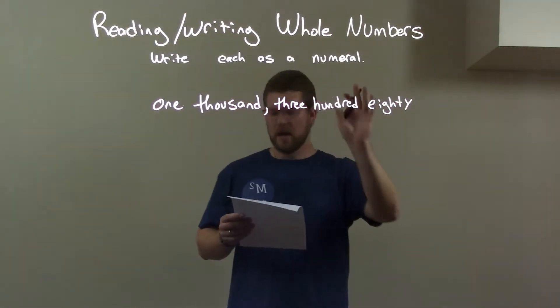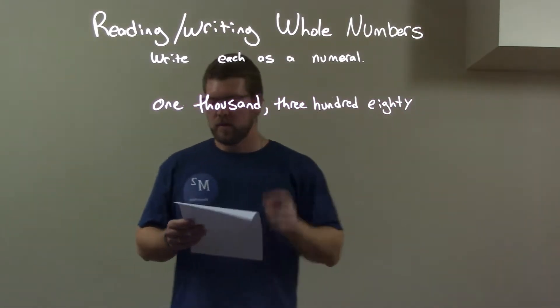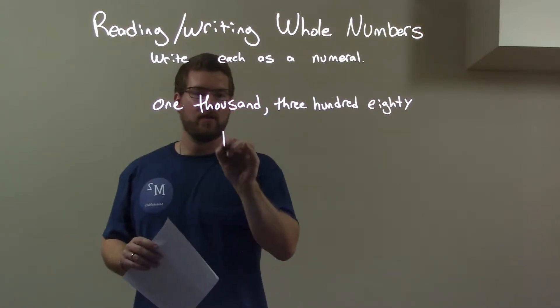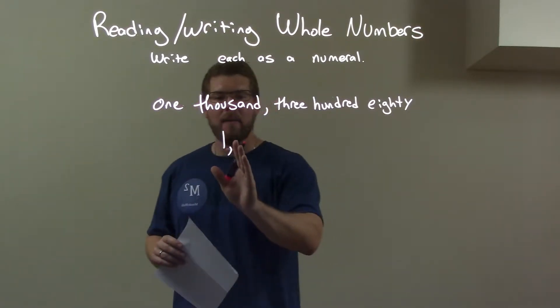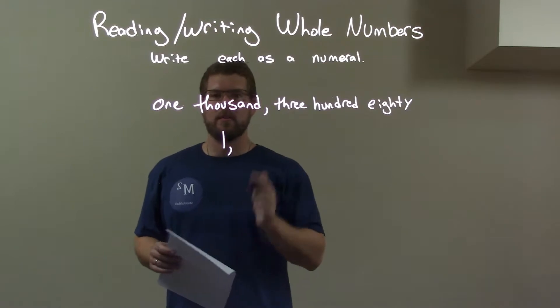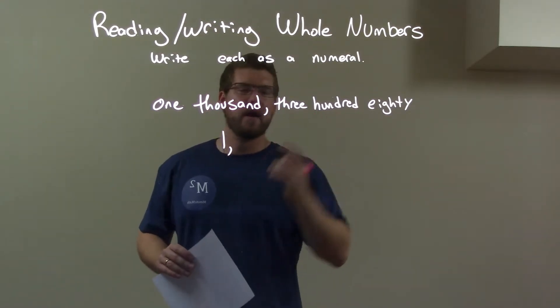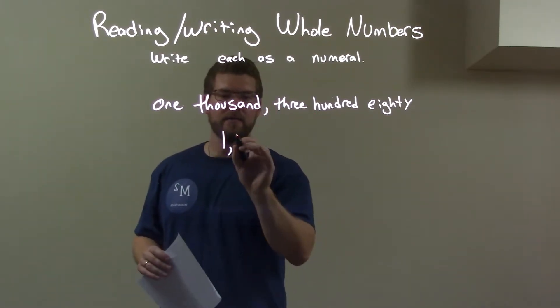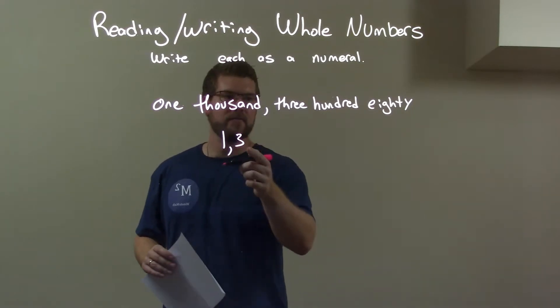So we have 1,380. Okay, so first, let's start with the 1,000. We have the 1,000 right here, and that means there's going to be 3 spaces afterwards. But, coincidentally, 300 is the next space, right? So 3 for the hundreds place, right? 300.